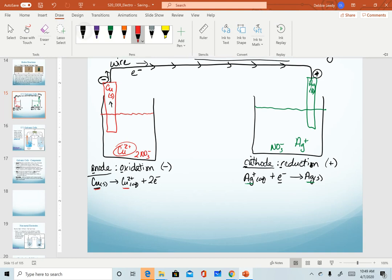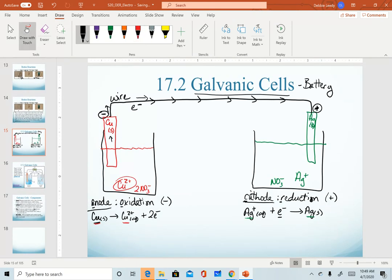Over time, the copper metal is actually going to decrease. So as this reaction happens, I'm actually going to start to eat away at the solid in here, right? My solid is my reactant. It's going to decrease. So the mass of my metal in the anode compartment decreases.